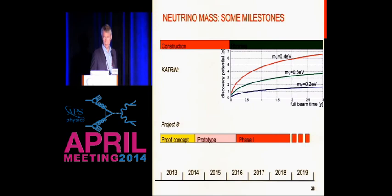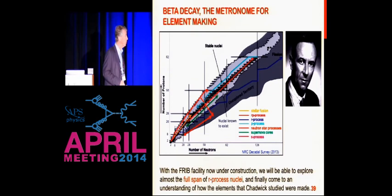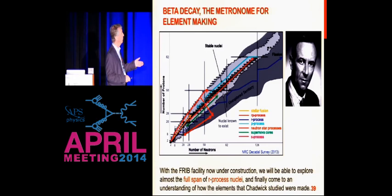Let me just conclude by also mentioning that beta decay is sort of the metronome by which all of the elements were made. With the FRIB facility now under construction at Michigan State — which just started four weeks ago — we will be able to explore almost the full span of r-process nuclei and finally come to an understanding of how the elements that Chadwick originally studied have come to be present in the universe. Thank you very much.